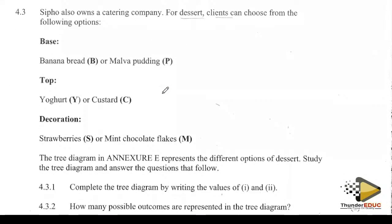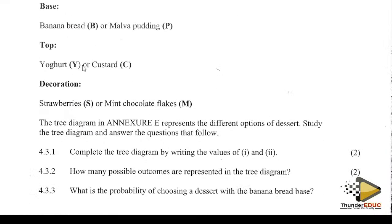Section 4.3 is about probability — they brought a tree diagram. Sipo also owns a catering company. For dessert, clients can choose from the following options. The base has two options: either banana or pudding. The topping is either yogurt or custard. The decoration is either strawberries or chocolate flakes.